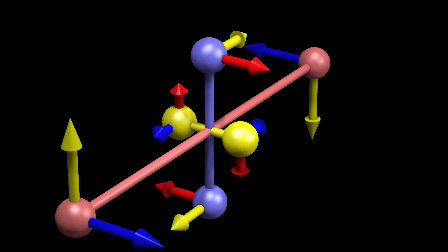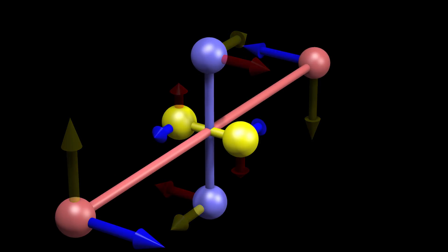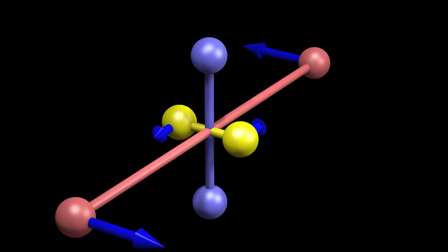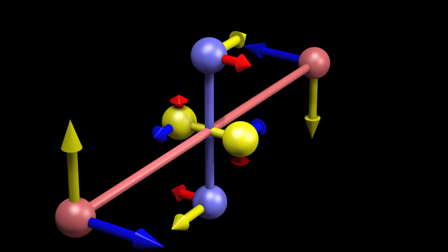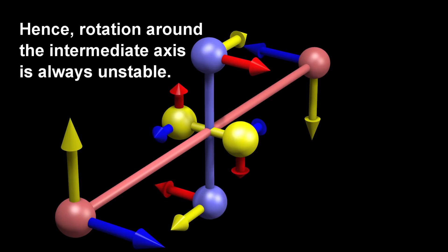In theory, the object could rotate just around the intermediate blue axis if the rotations around the red axis and yellow axis are precisely zero. However, if the object has even the slightest rotation around the red axis or yellow axis — even from the collision of a single air molecule — then the rotations around both the red axis and the yellow axis will end up growing. Hence, rotation around the intermediate axis is always unstable.